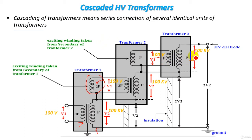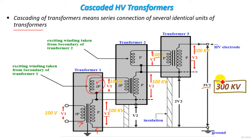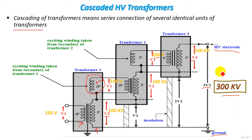Finally, the total output voltage of this arrangement will be V2 + V2 + V2, so the output voltage is 3V2. The output voltage of the cascaded high voltage transformers here is 300 kilovolt. This voltage is of course between the high voltage electrode and the ground. So we use the cascaded high voltage transformer for producing voltage above 300 kilovolt.